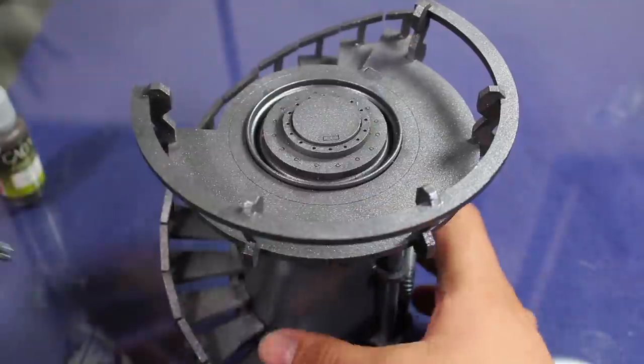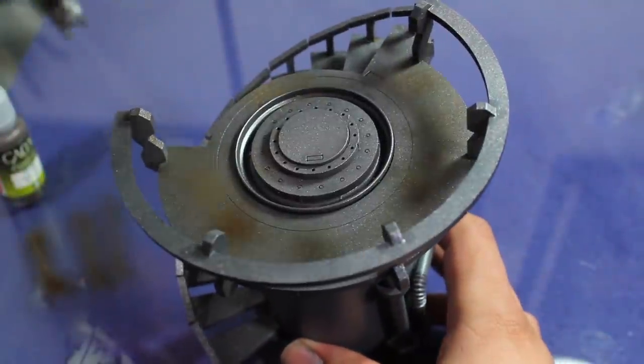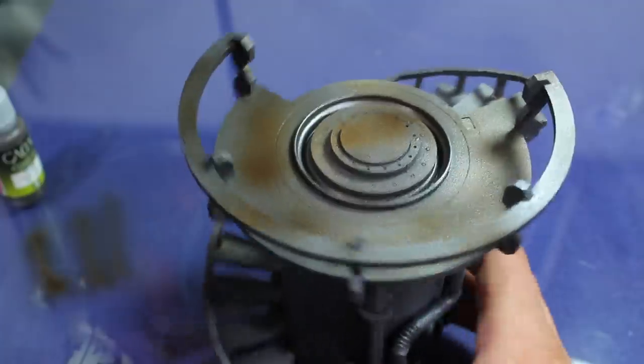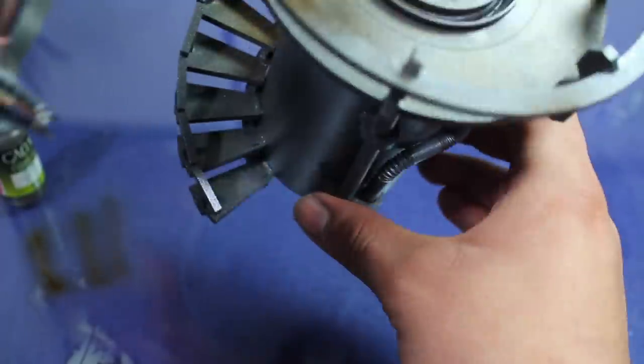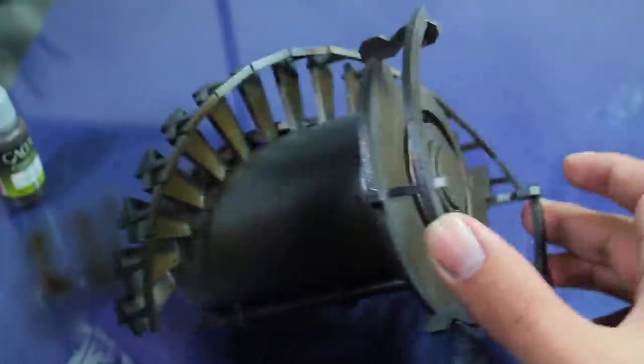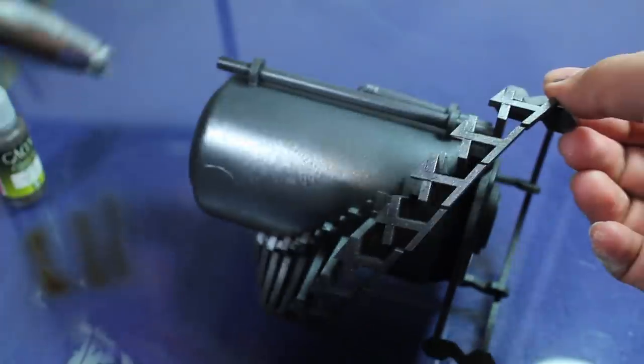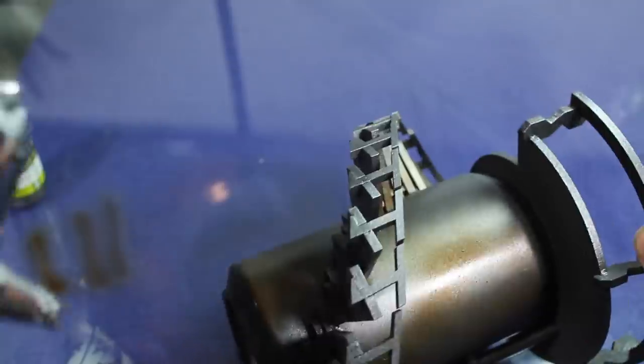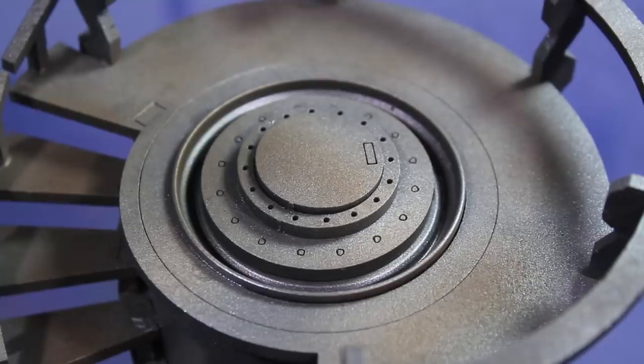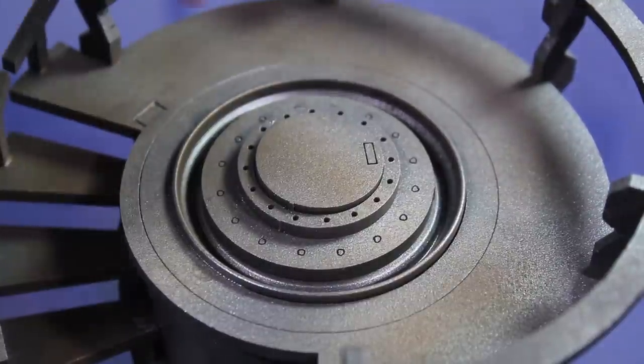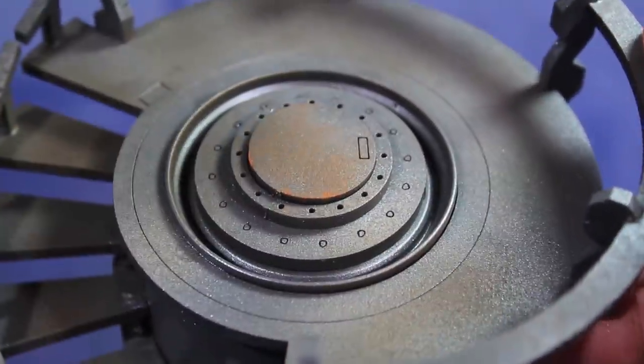Once that was dry, I put a little bit of Vallejo Game Effect Dry Rust through my airbrush to continue giving it a mottled, dirty metal appearance. I gave it some spots to look like more heavily tarnished areas, and I'm showing this top plate as an example of what I'm doing to the entire model.